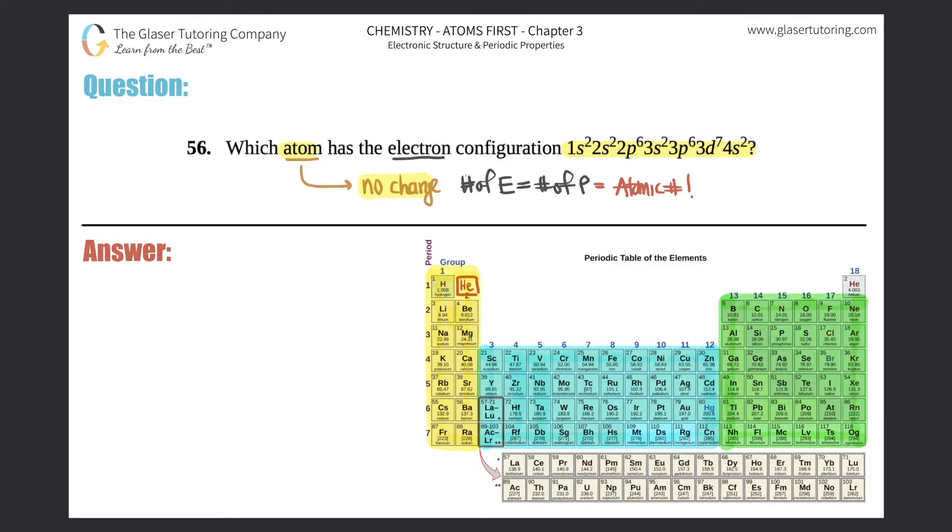All we have to do is find out the total number of electrons, which will lead us to the atomic number, and then we can find out the atom.